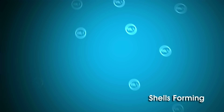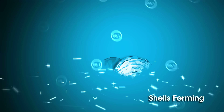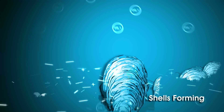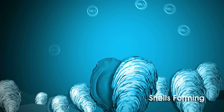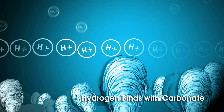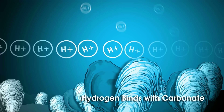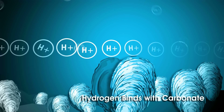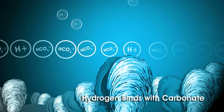Let's review. In a healthy ocean, carbonate is taken from the water and combined with calcium to form the shells of many animals. But in an acidic ocean, the abundance of hydrogen ions bind with the carbonate and prevent shell formation.